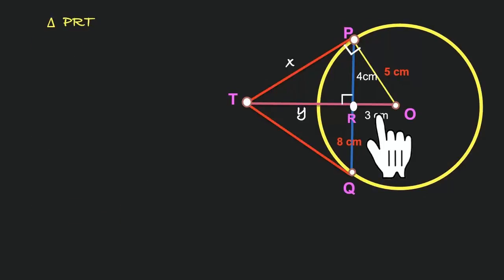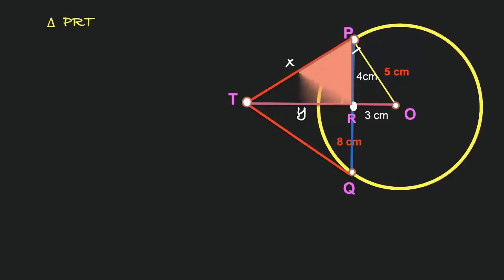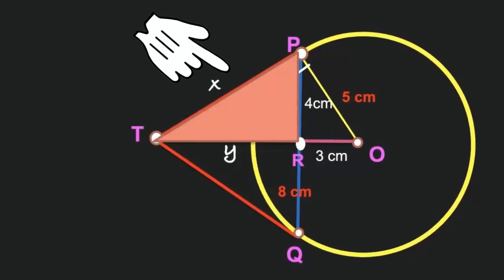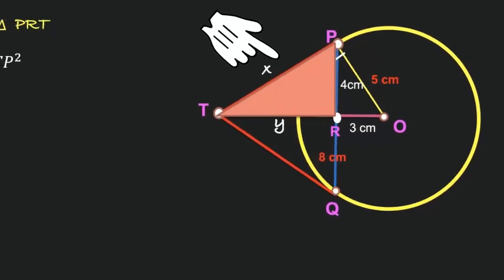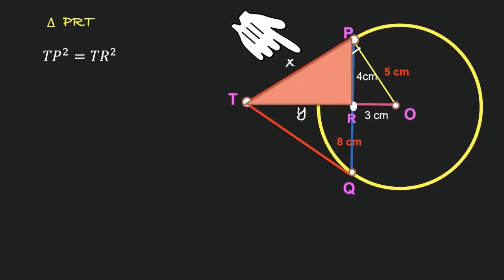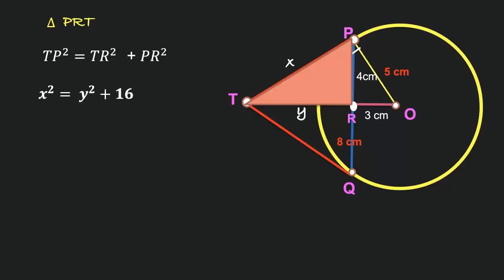Triangle PRT is a right-angled triangle. In triangle PRT, the hypotenuse is TP. So TP² = TR² + PR². We know TP is x and TR is y, so x² = y² + 4², that is x² = y² + 16.